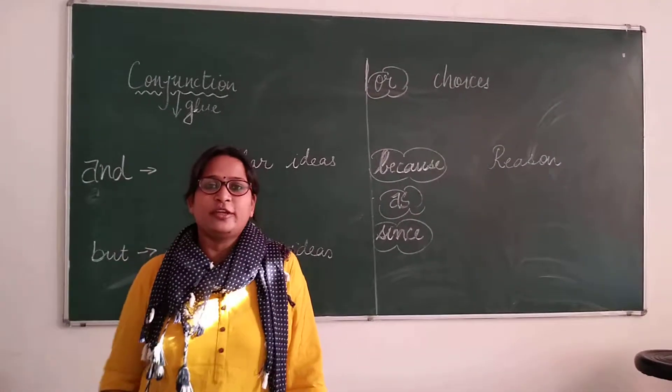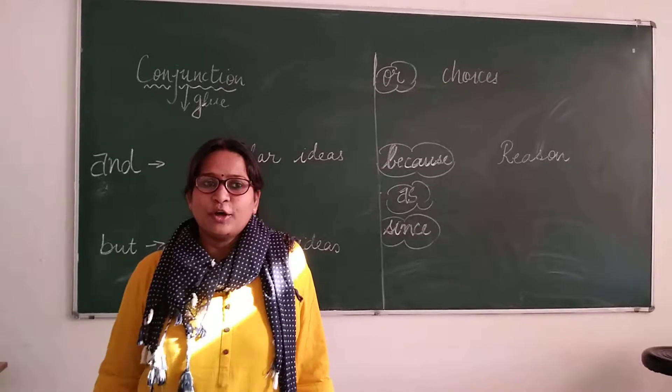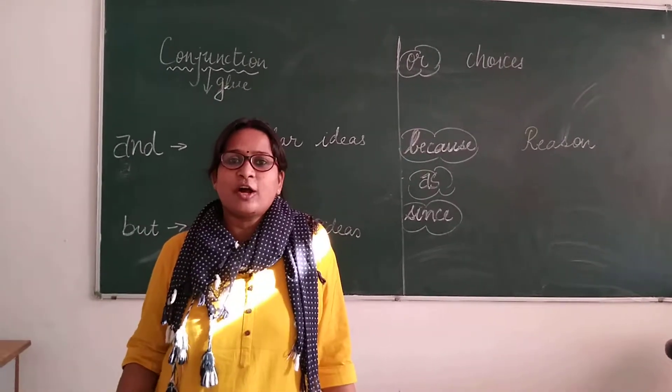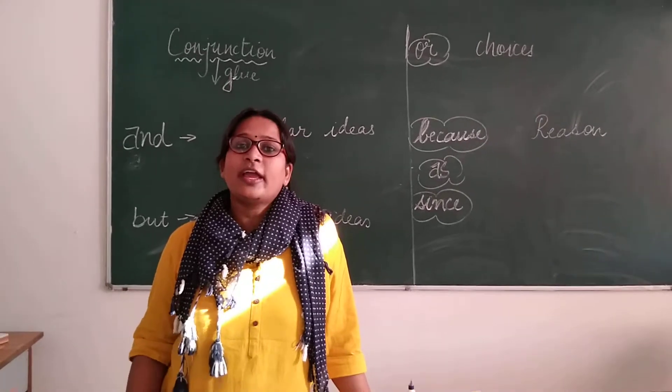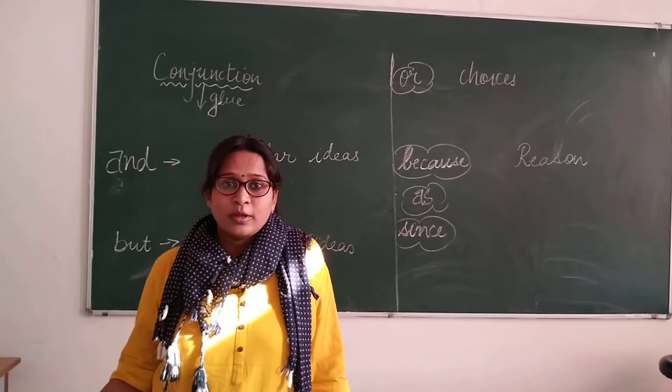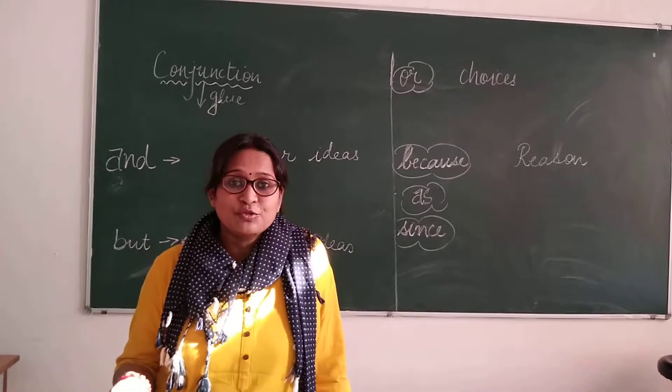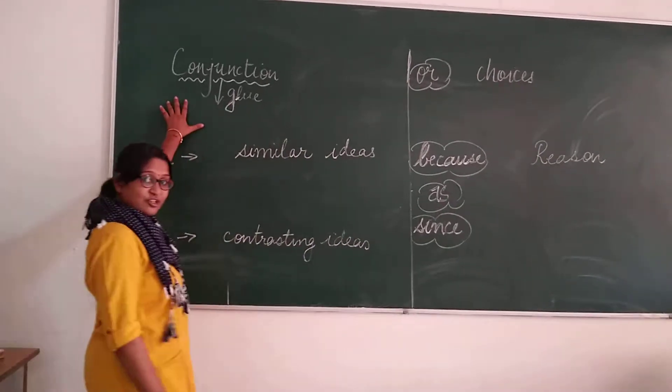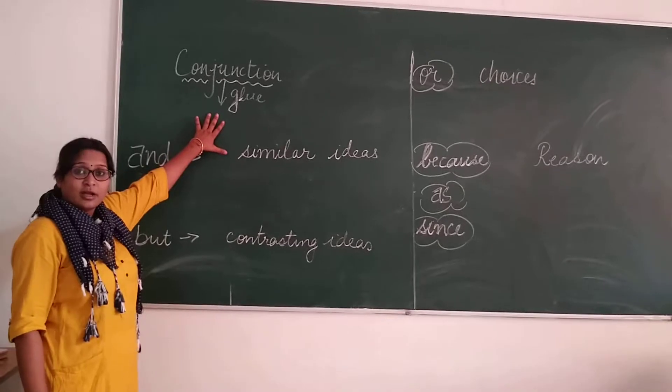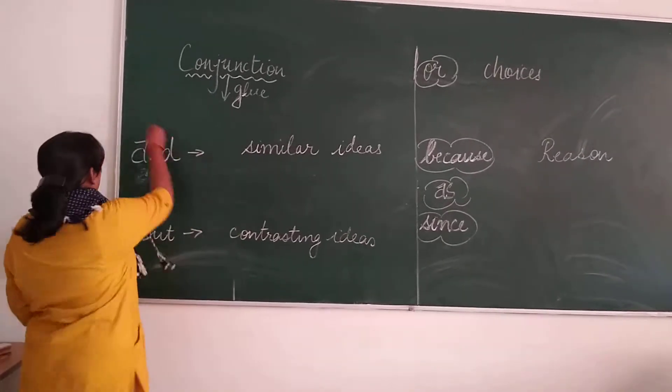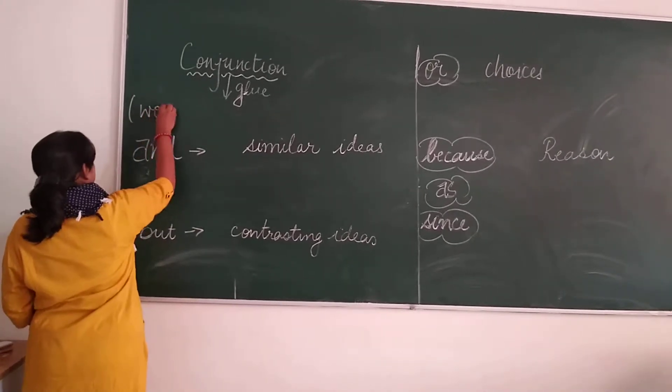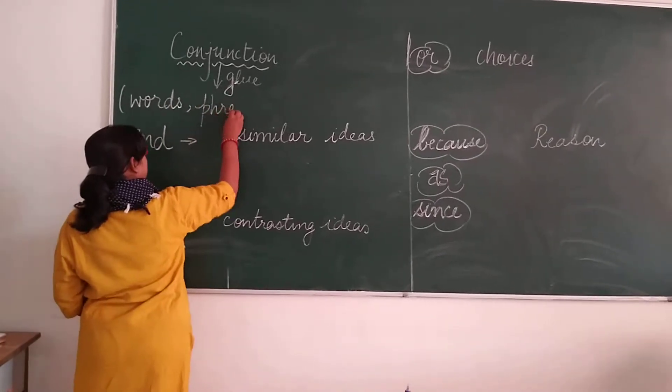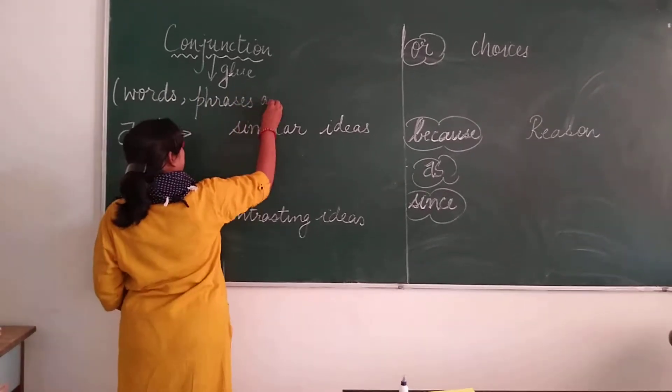What do you use to join two broken pieces of toys or two small boxes? Definitely you use fevicol, fevistick, or any other kind of glue. What are used to join words, phrases, and sentences? We use conjunctions. So a conjunction is a glue that is used to join words, phrases, and sentences.